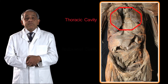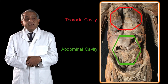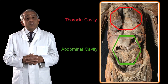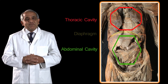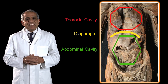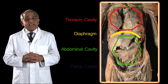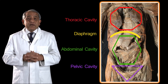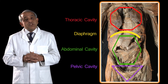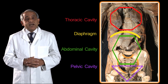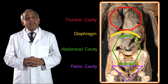Between the thoracic cavity and the abdominal cavity is an actual physical muscular partition which we call the diaphragm. Between the abdominal cavity and the pelvic cavity, however, there is no such physical partition. In fact, the two cavities are generously continuous with each other through the pelvic brim.